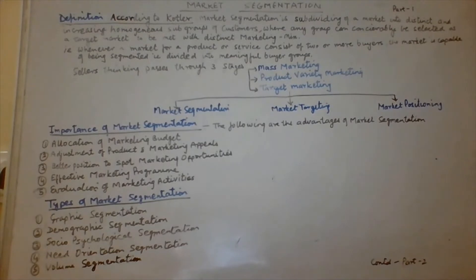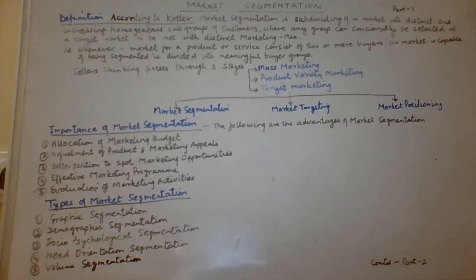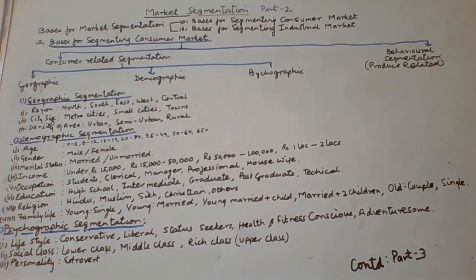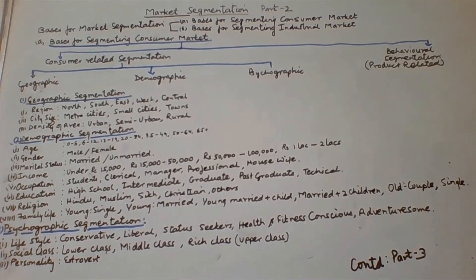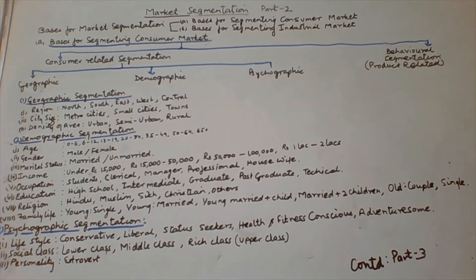The last type is volume segmentation, which involves segmenting the market on the basis of heavy, medium, light, or no users. For example, with cigarettes, there are heavy smokers, medium smokers, light occasional users, and people who do not smoke at all. These segments are made on the basis of the volume they buy. This will be followed by a discussion on the basis for segmenting consumer markets and industrial markets in the next section.